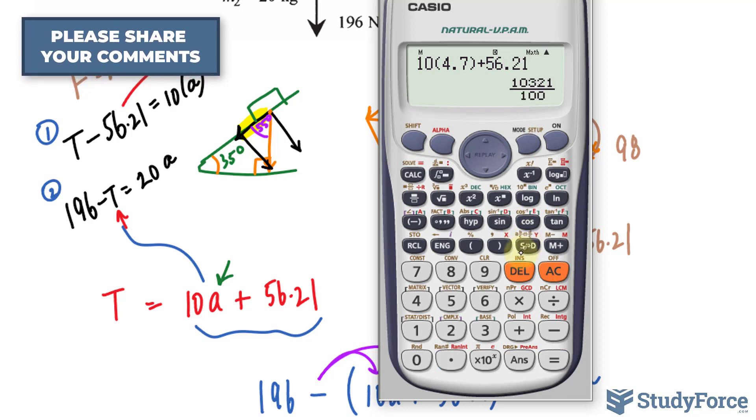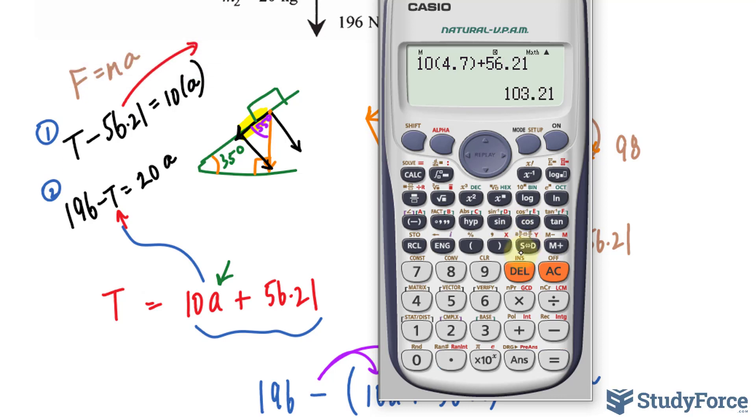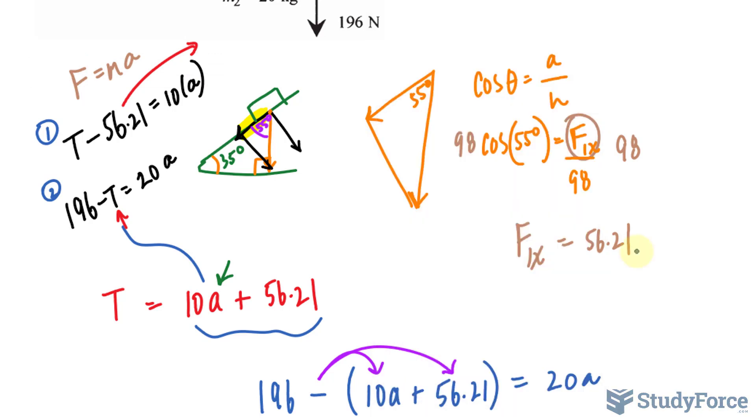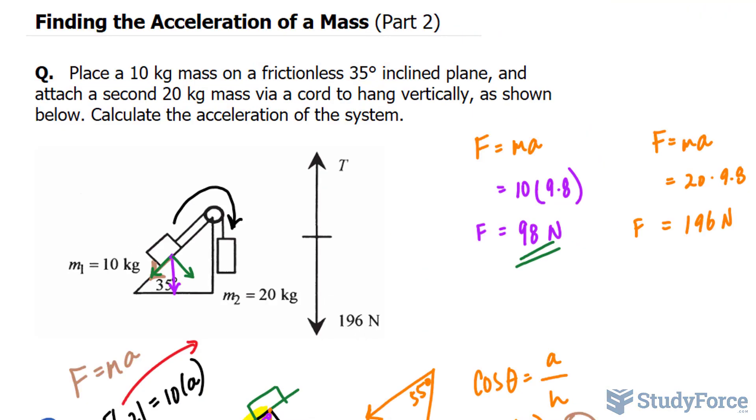That gives us a value of 103.21 or simply 103 Newtons. And there you have it. Another example that relates Newton's second law to finding the acceleration of a mass.